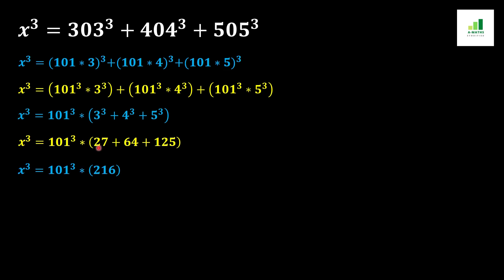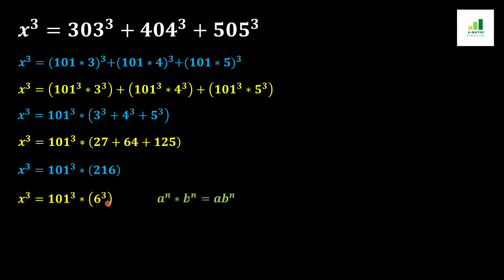In the next step, after adding the three values, 27 + 64 + 125 = 216. And we know that 216 equals 6³, so it can be written as 6³.